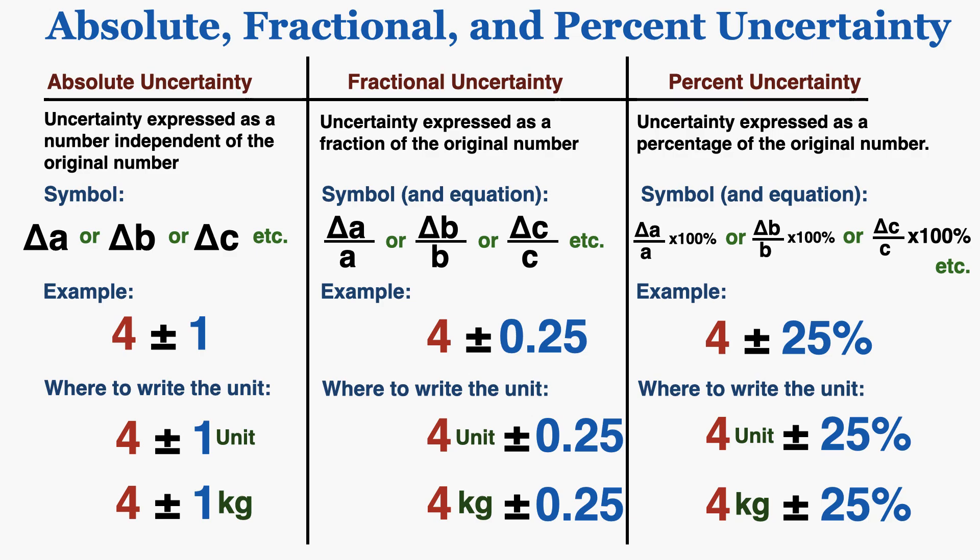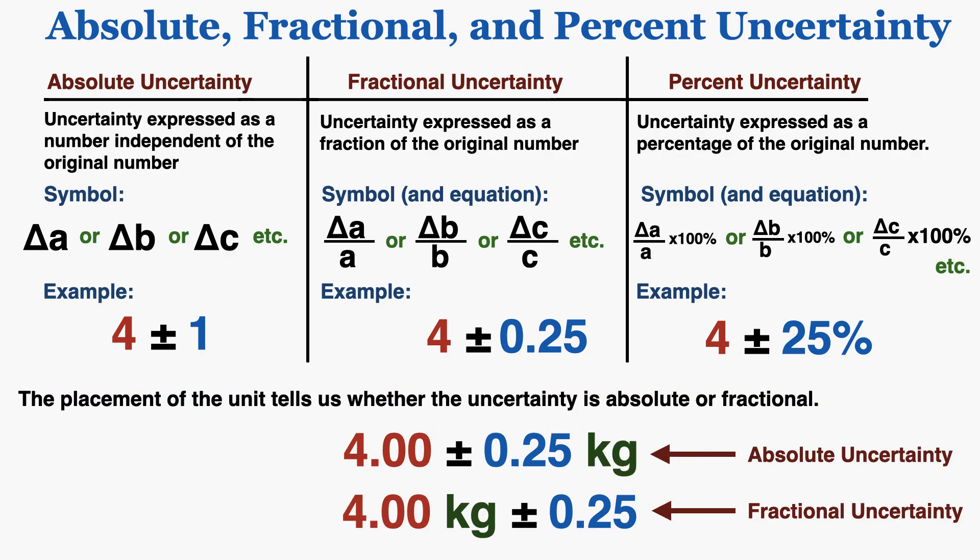As an example, if we were measuring something in kilograms, this is how we would write the absolute, fractional, and percent uncertainty with the unit in the correct place. It wouldn't really make sense to say 'plus or minus 25% kilograms' — that statement doesn't make sense on its own. So instead we say it's four kilograms plus or minus 25% of that value. The placement of the unit can tell us whether the uncertainty is absolute or fractional.